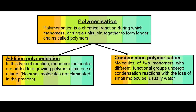In condensation polymerization, molecules of two monomers undergo a condensation reaction where the two monomers join to form polymers — very large molecules called macromolecules. The result is that water is lost in the reaction.